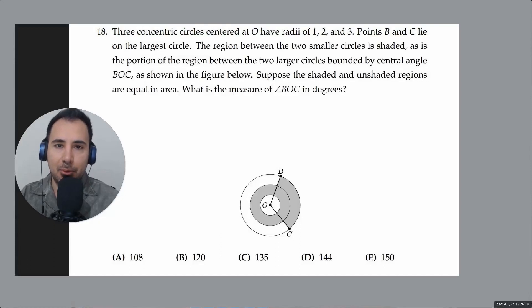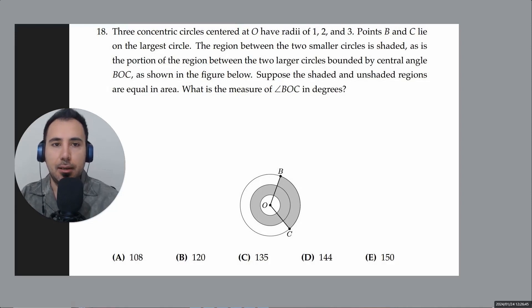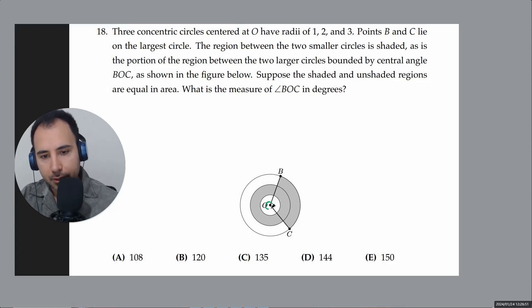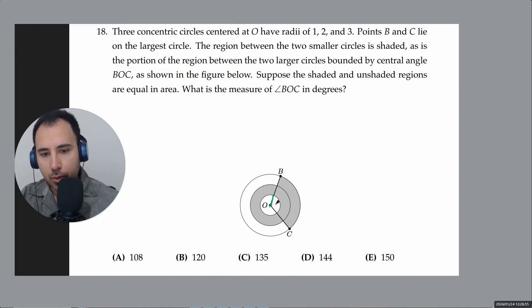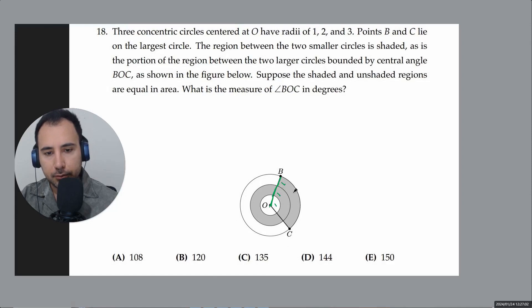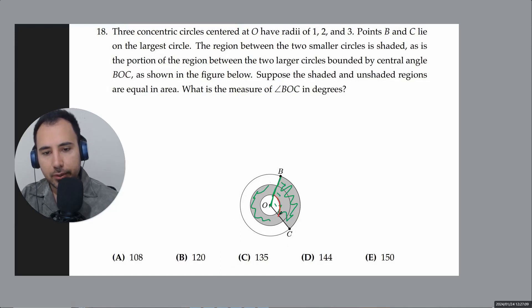Problem 18 is a typical AMC question — this idea has been repeated in many tests, even AMC 8. It says these circles are concentric, meaning they all start from the same center. In the picture, each radius segment from one circle to the next is one unit. The shaded portion is equal to the unshaded portion, and we need to find the angle shown — how many degrees it is.